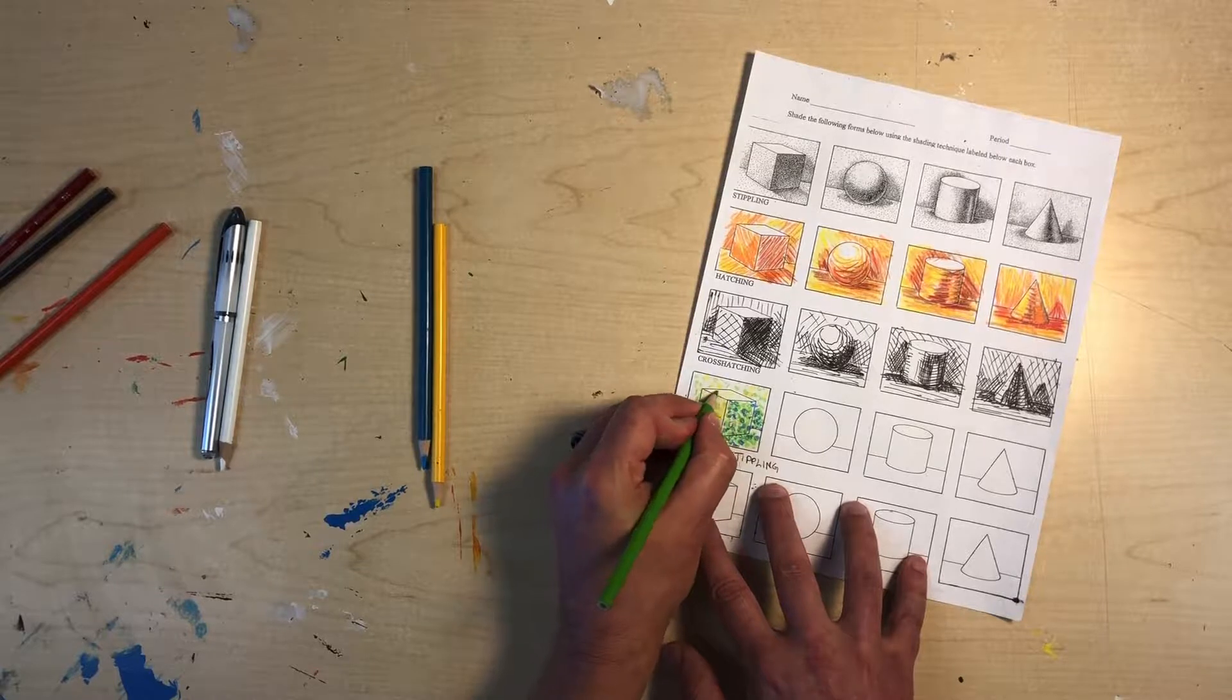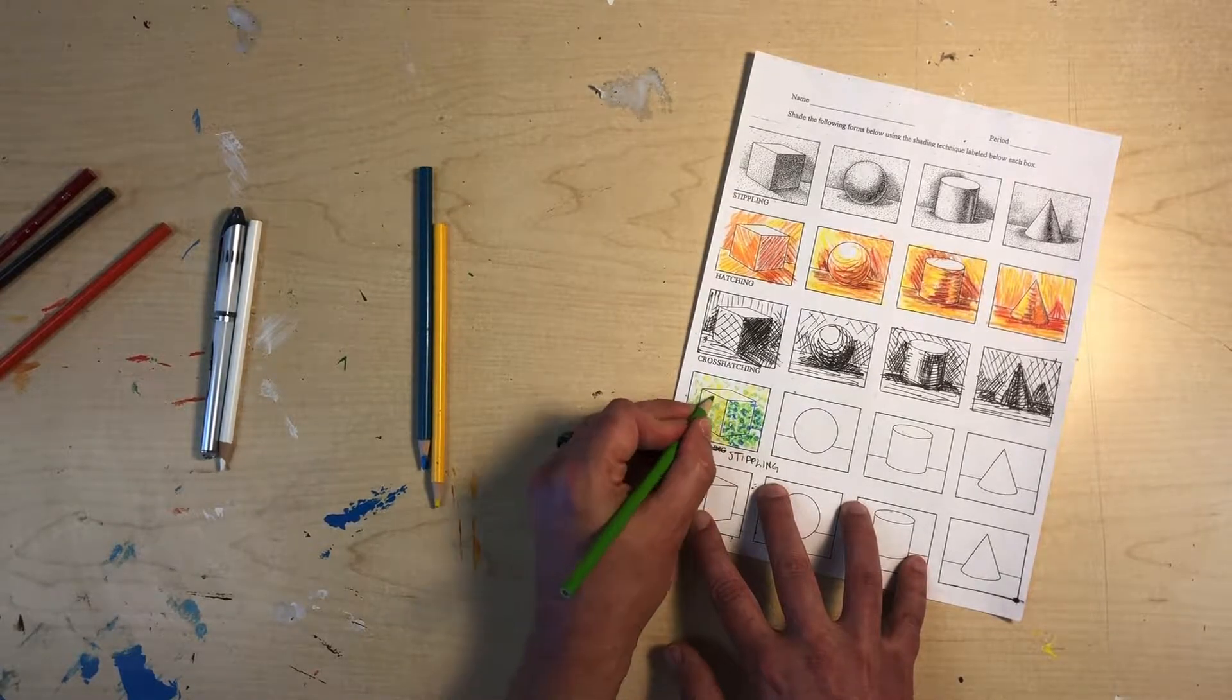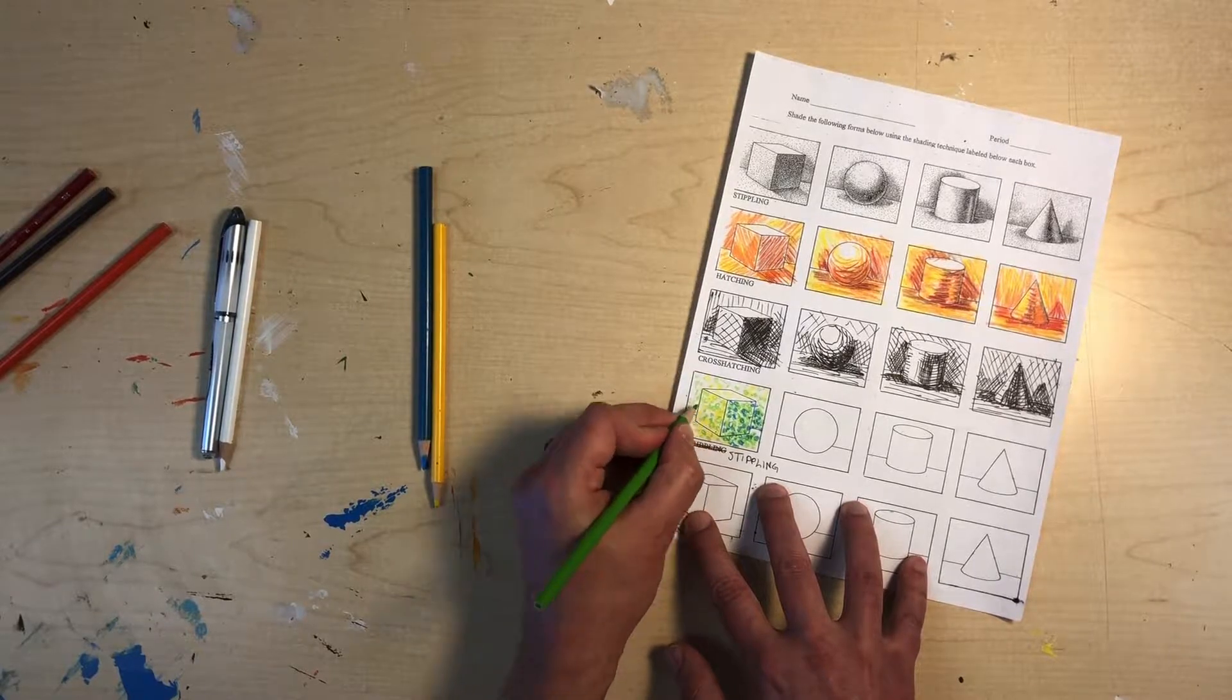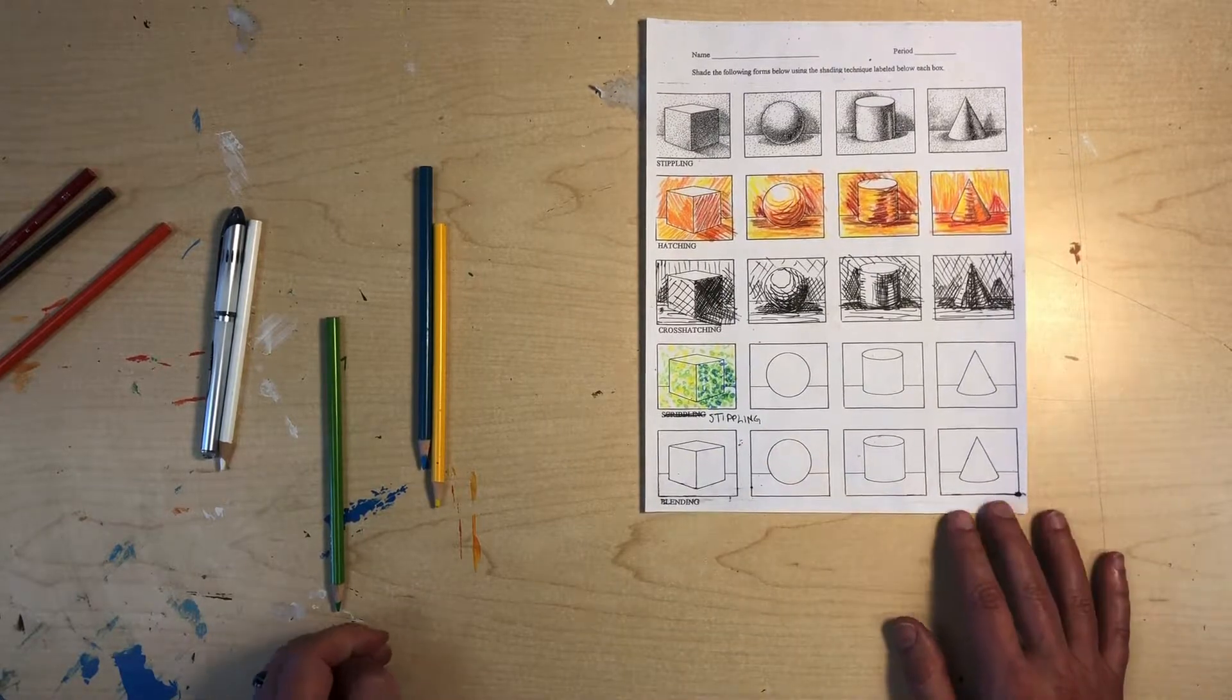Put some of the yellow in the background maybe even a couple of dots on that highlight. Maybe just very small dots of green just to give the hint of green. Put some more on this side. All right so there's our cube.